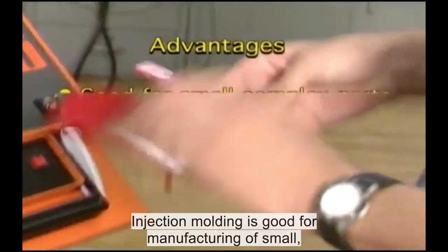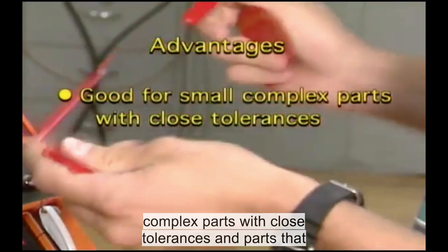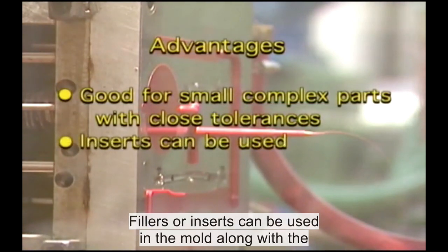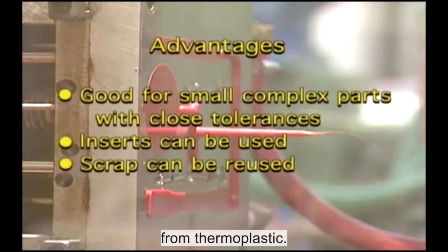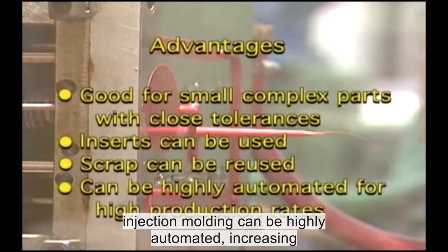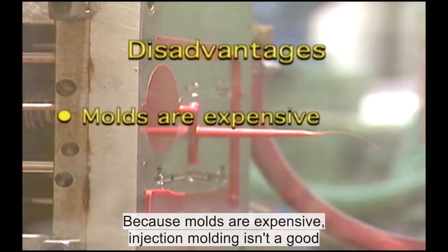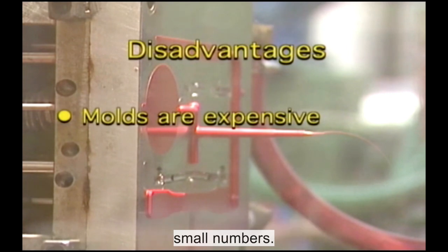Injection molding is good for manufacturing small complex parts with close tolerances and parts that require very little finishing. Fillers or inserts can be used in the mold along with the plastic and the scrap can be reused if the part is made from thermoplastic. Most importantly, although it's a batch process, injection molding can be highly automated, increasing the number of products produced per hour. Because molds are expensive, injection molding isn't a good process to use for products with short production runs of small numbers. Additionally, the initial equipment costs are high.